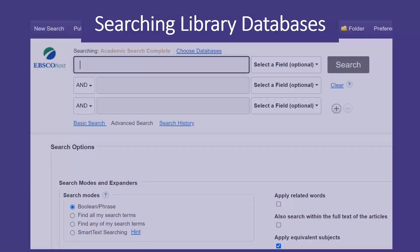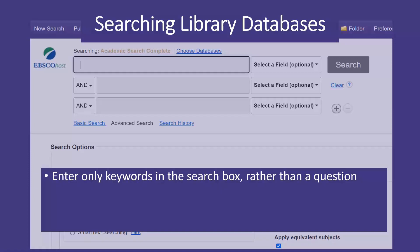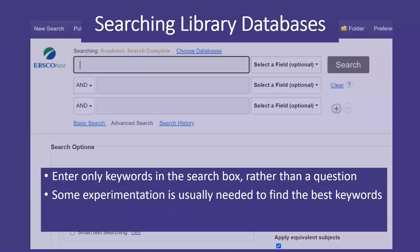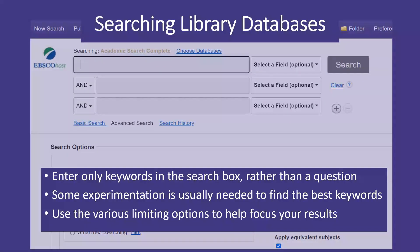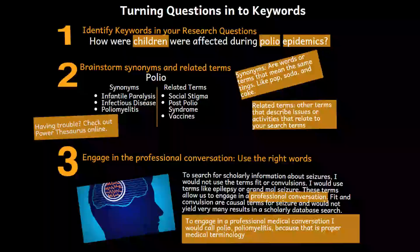These are the essential things you need to keep in mind when searching a database. Enter only the keywords in the search box, rather than your research question. Some experimentation is usually needed to find the best keywords. Finally, use the various limiting options to help you focus the results. So how do you develop keywords?